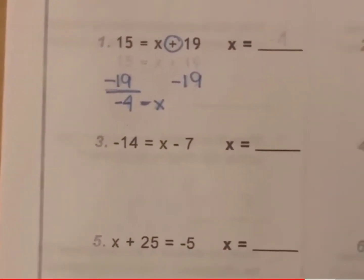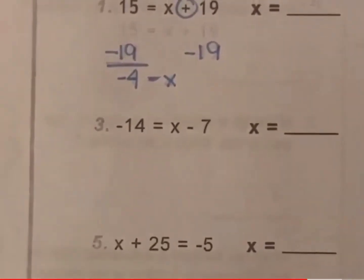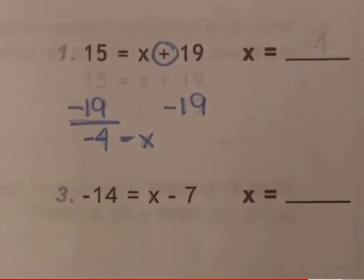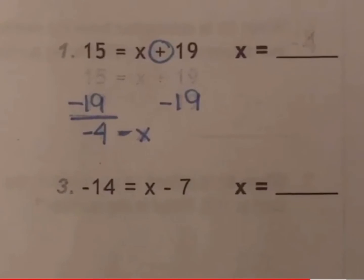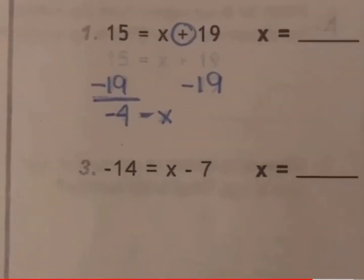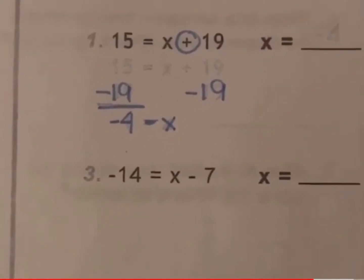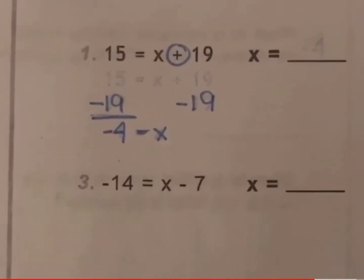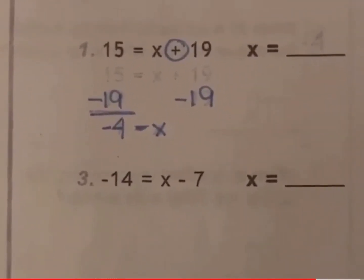Inverse means opposite. So, you will subtract 19 from both sides. And, when you do, you get 15 minus 19 is negative 4. And, then x plus 19 minus 19 ends up with just x. So, then you have negative 4 equals x.